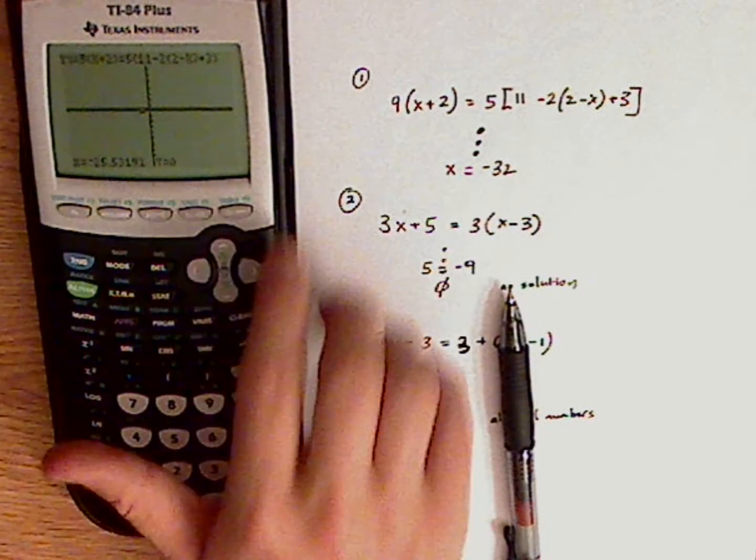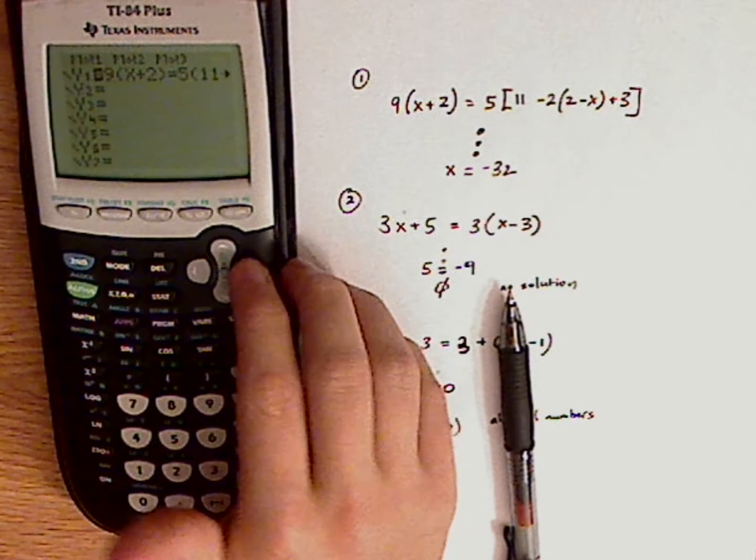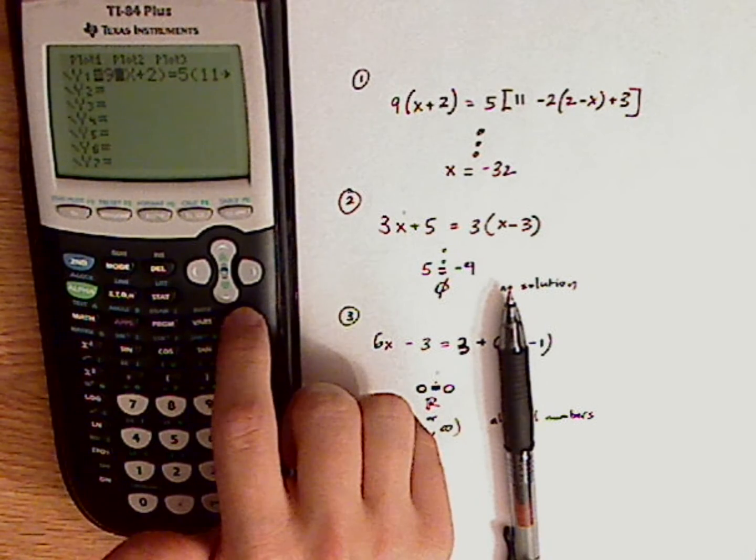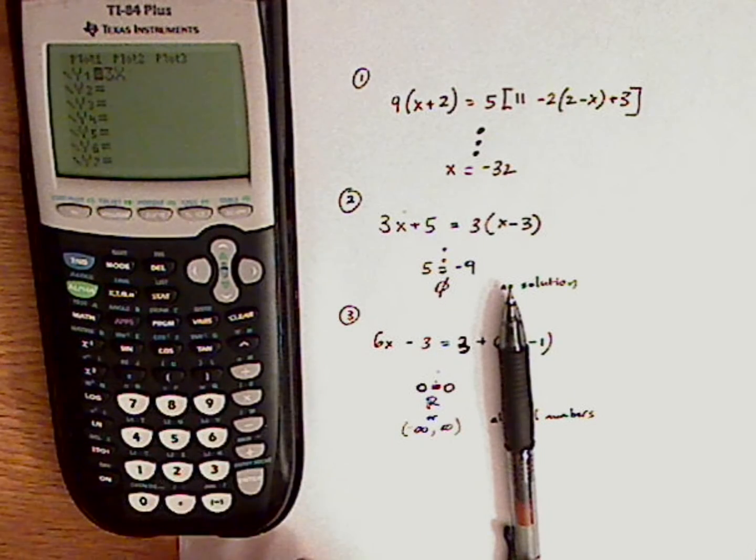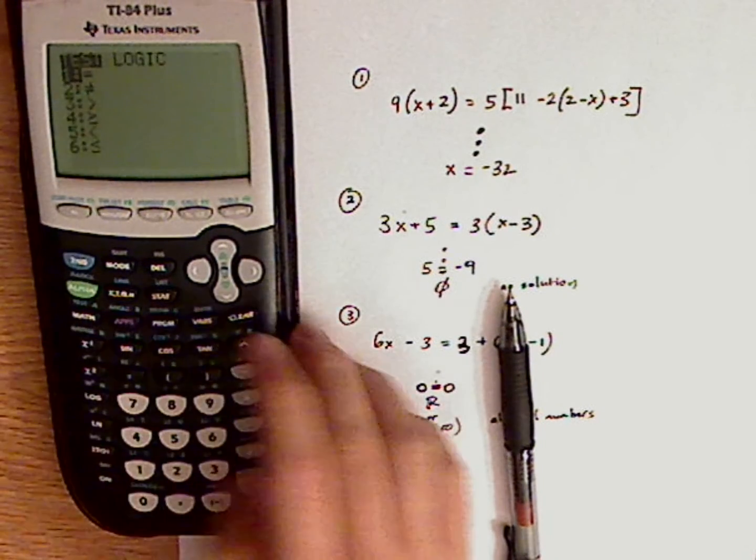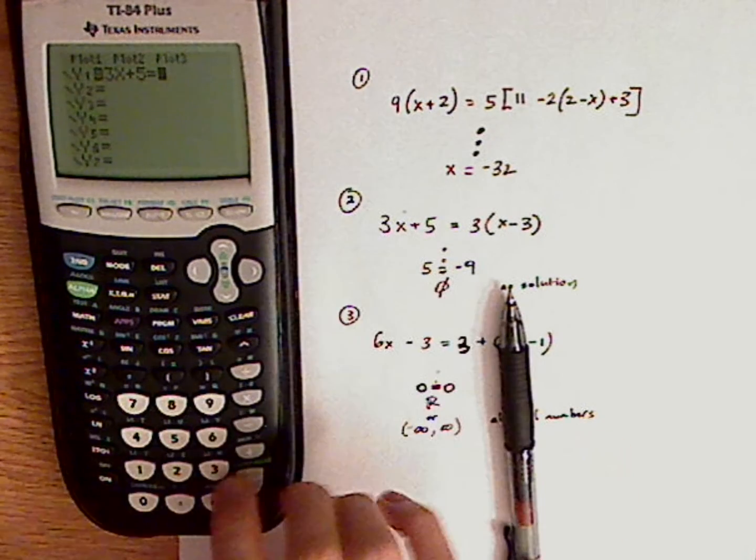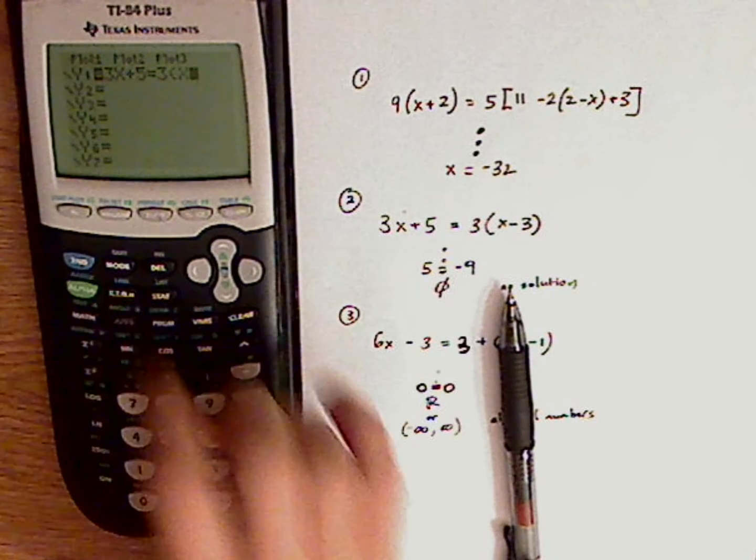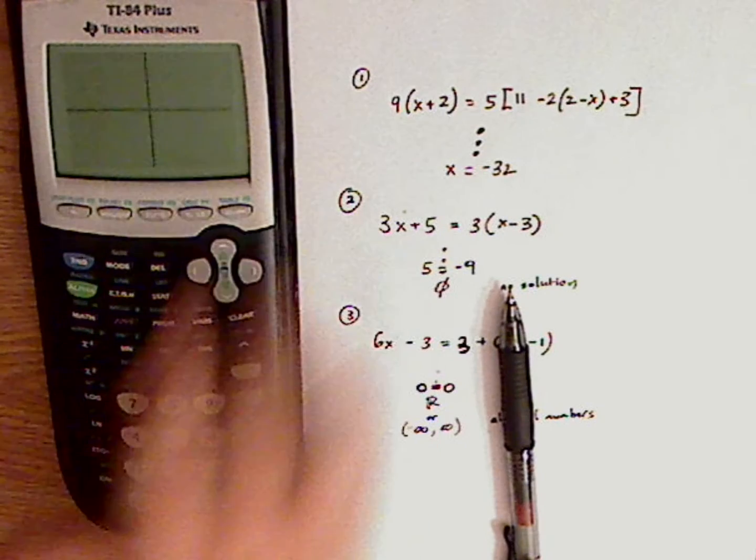Now to check no solution, go back to y equals. I'm going to clear it. Whole thing. And I'm just going to push that in. 3x plus 5. I need the equal sign. So I'm going to push test second and then math. 3 parentheses x minus 3 closed parentheses. Now I'm going to graph it.